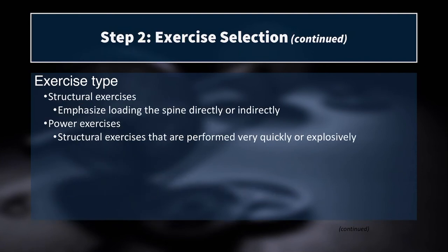Within our primary exercises, we also have structural exercises — exercises that emphasize loading of the spine directly or indirectly — such as back squats, deadlifts, or overhead presses, where you are bearing the load axially. This is important because bone and connective tissue responds to the demands placed upon it. Axial loads encourage increases in bone mineral density and activate the central nervous system to a greater extent, so we should not neglect exercises that load the spine appropriately.